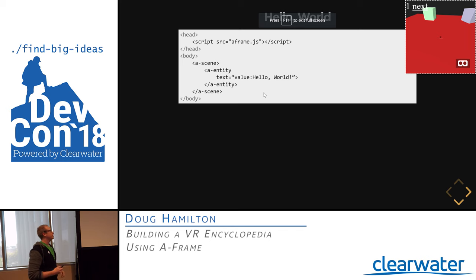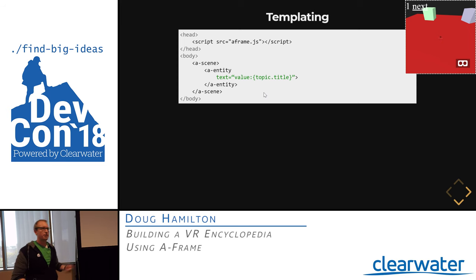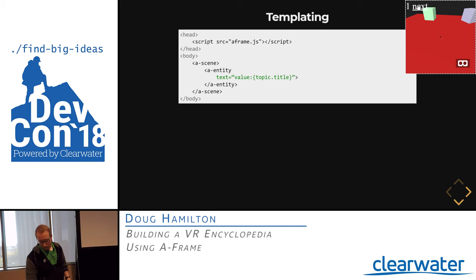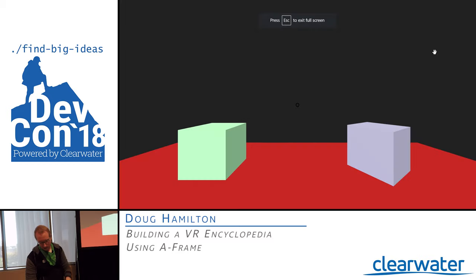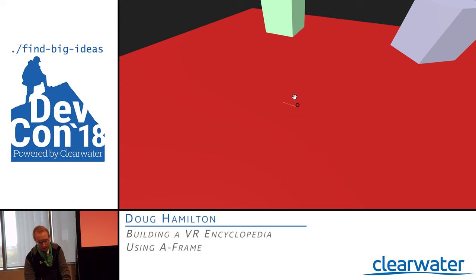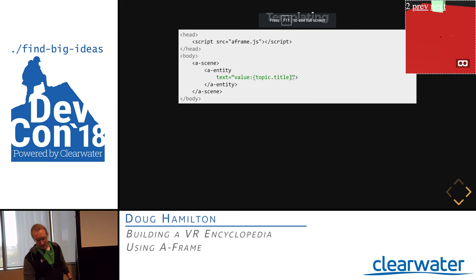The first thing we're going to do is replace that Hello World string with our topic title. Using a basic templating approach, we take the title off of our topic object and replace 'Hello World' with that string. What we get is 'Boise, Idaho' now stuck in the ground — it's probably impossible to read on screen, but it's there. We'll fix that in just a moment.